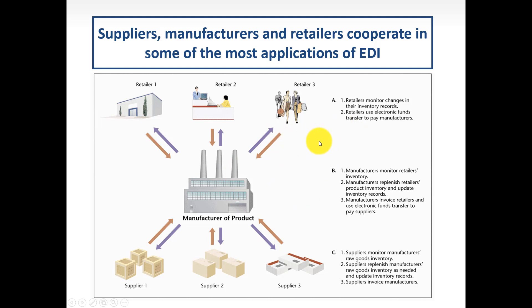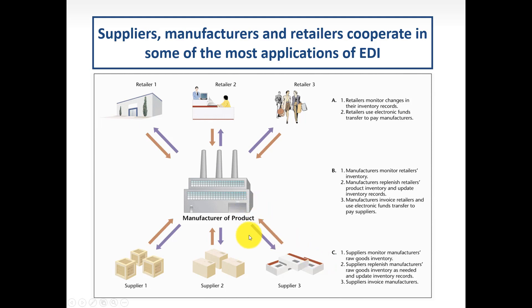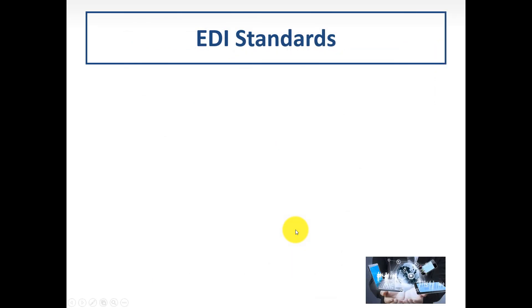In a supply chain example, retailers on the demand side monitor changes in their inventory records and use electronic funds to pay manufacturers. Manufacturers monitor retailer inventories and replenish their product inventory, updating records and invoices. Suppliers monitor manufacturers' raw goods inventories, replenish them, and invoice. Everything — inventory management, replenishment, and orders — flows smoothly through the system.